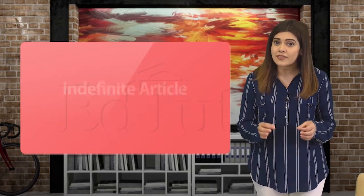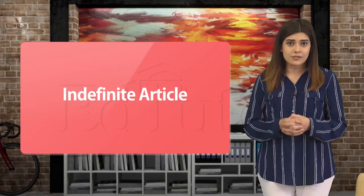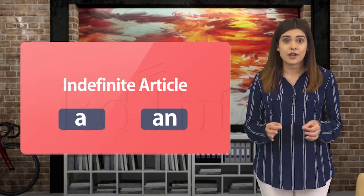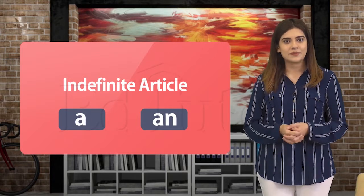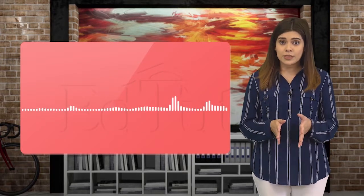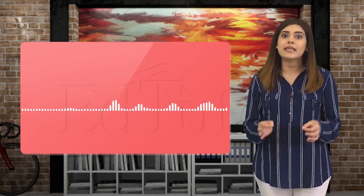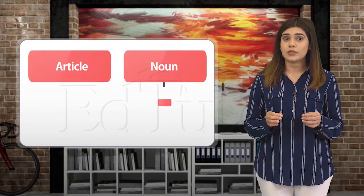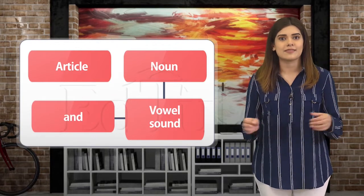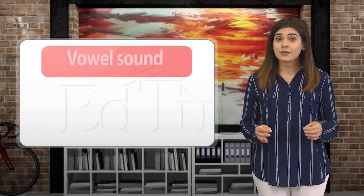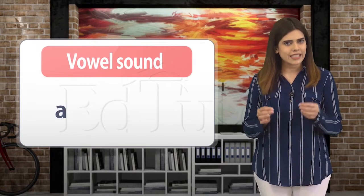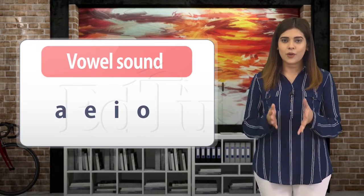Using an indefinite article is easy, but when it comes to deciding whether to use 'a' or 'an', there are a few rules to consider. When choosing between them, we must look at the sound at the beginning of the noun. If the noun that comes after the article begins with a vowel sound, we will use 'an'. A vowel sound is a sound created by the vowels a, e, i, o, u.